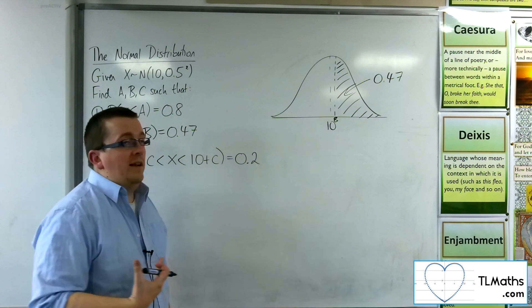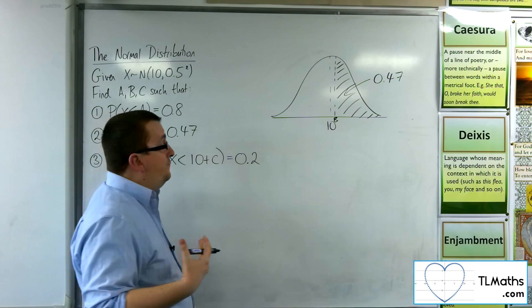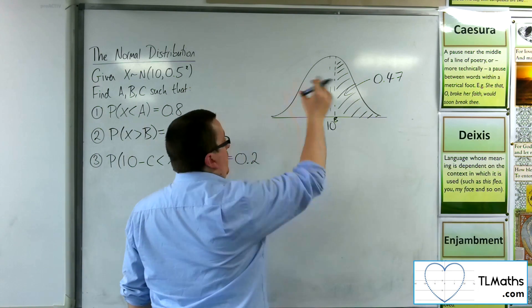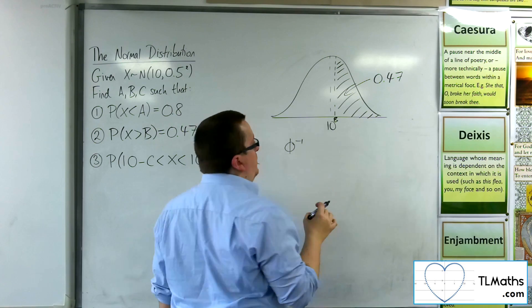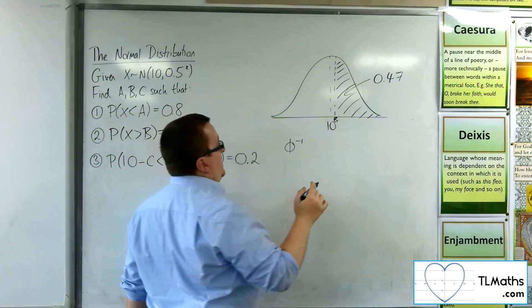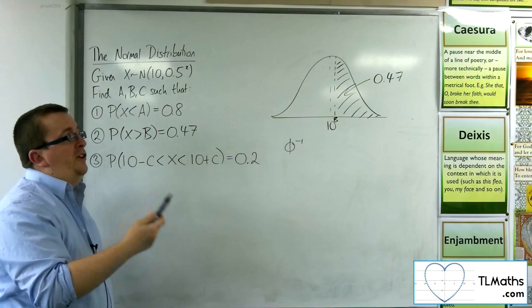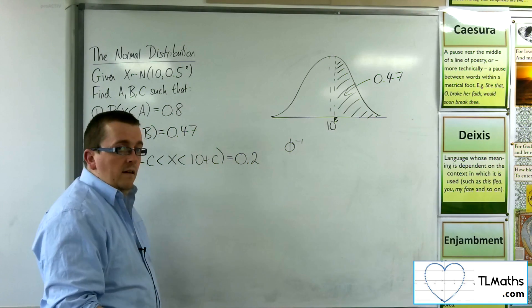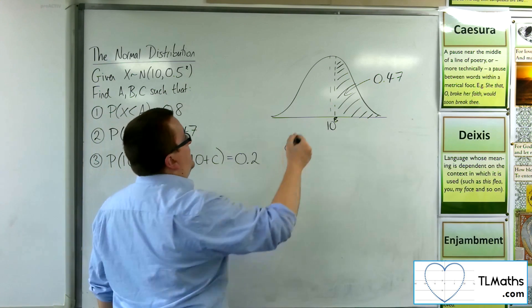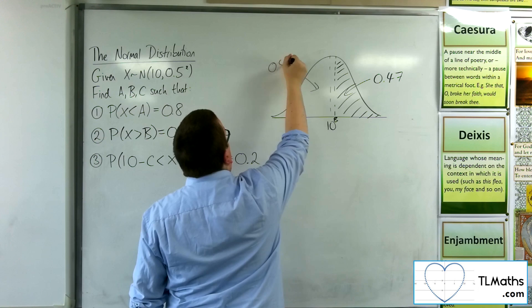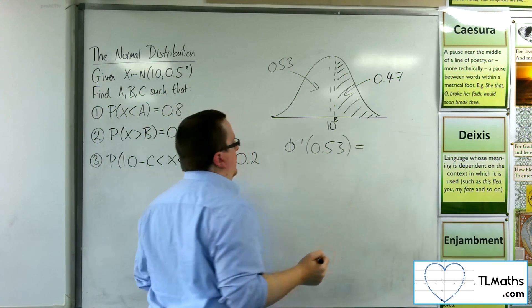Now, remember, your calculator can only work with areas to the left. So we can't type in the inverse norm of 0.47. That won't give us the correct value. So what we need to do is think, well, it's equivalent to say that if 47% are higher than b, then 53% are less than b. So instead, we can look up the inverse norm of 53%.